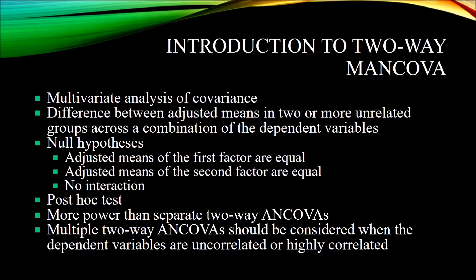Independent variables are also referred to as factors. The reason we are trying to determine the difference between adjusted means and not just between means is because we have at least one covariate in the model — a variable that we believe explains variance in the dependent variable and that we want to control for. We want to see the effect of the independent variables on a linear combination of the dependent variables while partialing out the effects of one or more covariates.